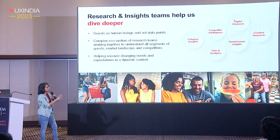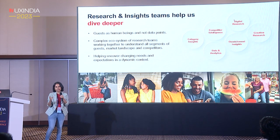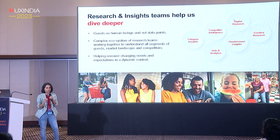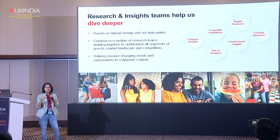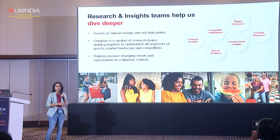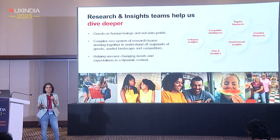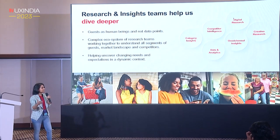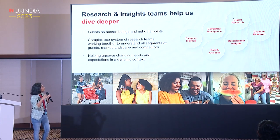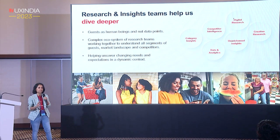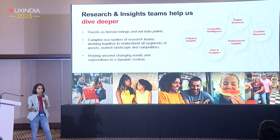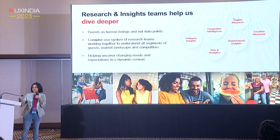There are massive teams involved. For example, if we're doing something around apparel and want to understand who the guest is, we have to understand the category, competitors, landscape, innovation in apparel, and even secondhand apparel. Imagine the number of categories we deal with — it's about 25 to 30 categories. To research that many categories takes an extensive ecosystem including digital research, creative, omni-channel, competitors, and data analytics. UX is just one part of these systems — we don't work in isolation.